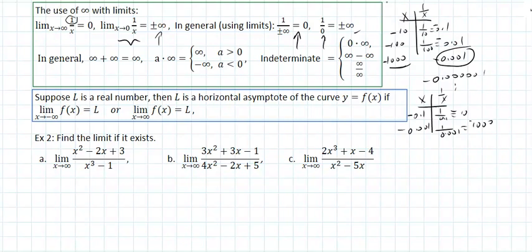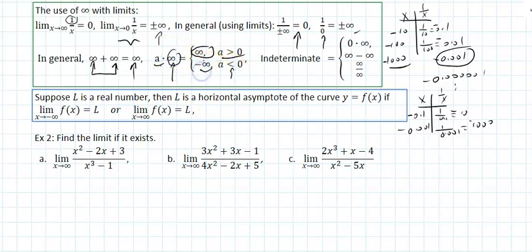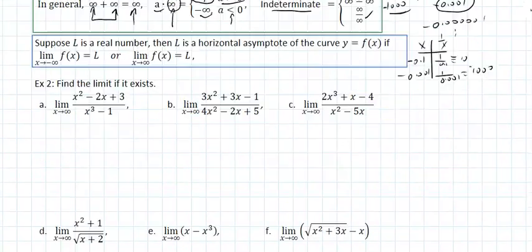Any time you're taking limits with infinities, think of infinity as an extremely large number. If you have two large numbers and you add them, that's infinity. If you take a very large number and multiply it by a positive number, that's still infinity. Multiply by a negative number, that becomes negative infinity. The indeterminate cases are: 0 times infinity, infinity minus infinity, and infinity divided by infinity — those require manipulation.